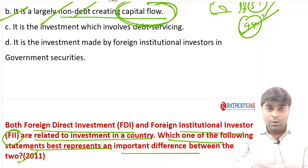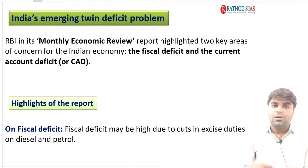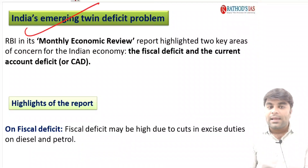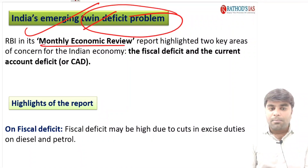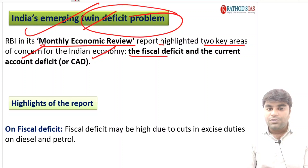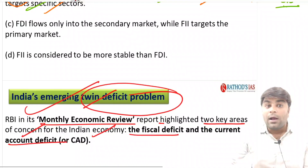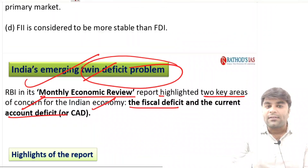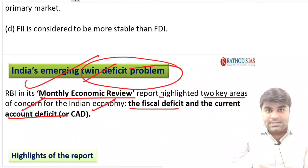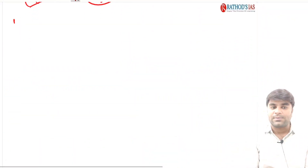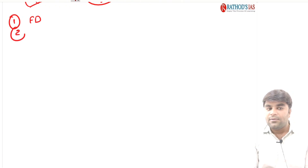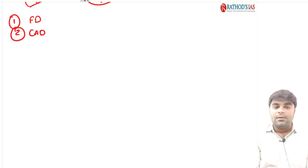The next topic we are going to discuss is India's emerging twin deficit problems. Note carefully — it is twin deficit problems, not twin balance sheet problems. RBI in its monthly economic review report highlighted two key areas of concern for the Indian economy: the first is the fiscal deficit and the second is the current account deficit.